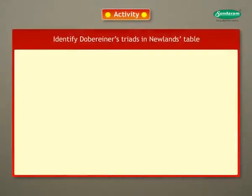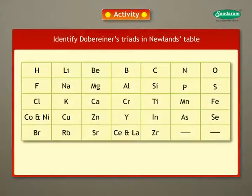Activity: Let us try to identify Dobereiner's triads in Newlands' table. Yes, we can see lithium, sodium and potassium in the second column which constitute a Dobereiner's triad.